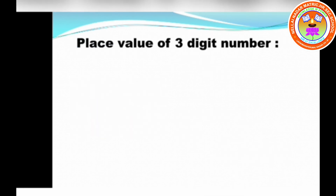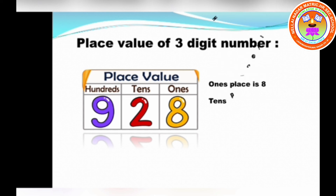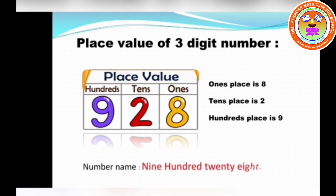Place value of 3-digit numbers. See the picture: the ones place is 8, the tens place is 2, the hundreds place is 9 — so the number is 928.